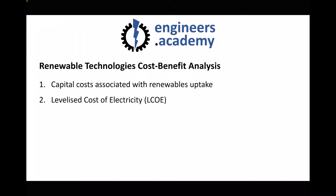Next we looked at the levelised cost of electricity. The difference with the levelised cost of electricity is that it takes running costs into account. Both a wind farm and a solar power plant have a working life cycle of 25 years, and the levelised cost of electricity looks at all of the costs across that life cycle and factors in the amount of energy being produced. In our comparison, both plants produced an equal average power output of 20 megawatts, so we were primarily interested in the total cost.